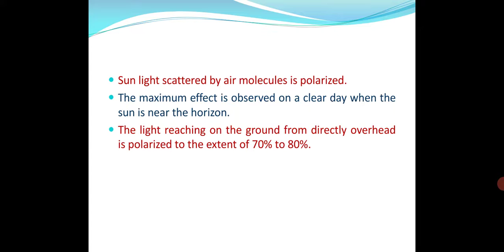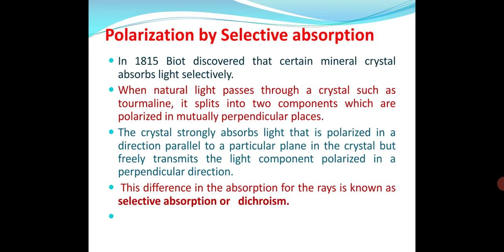A narrow beam of light is allowed through this. When sunlight is scattered by air molecules, it becomes polarized light. The maximum effect is observed on a clear day when the sun is near the horizon. The light reaching the ground from directly overhead is polarized to the extent of 70 to 80 percent.